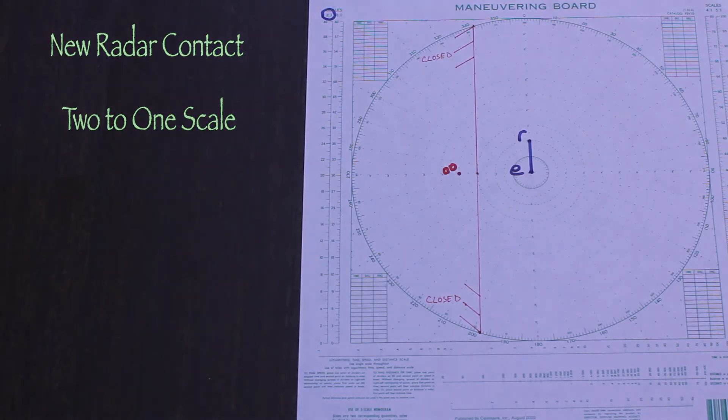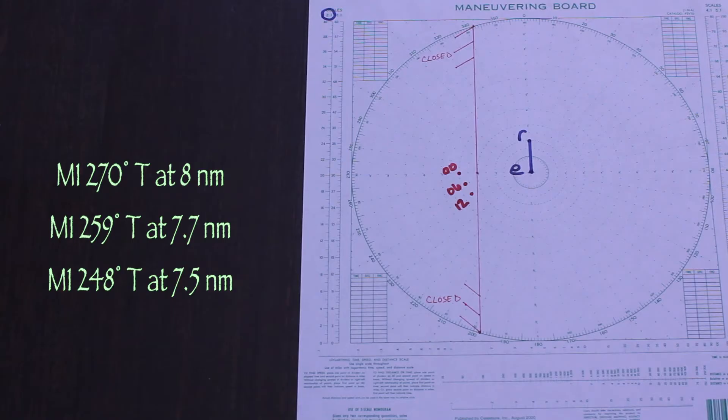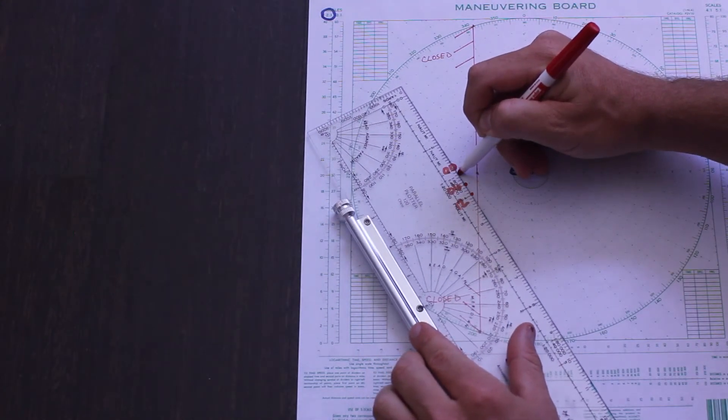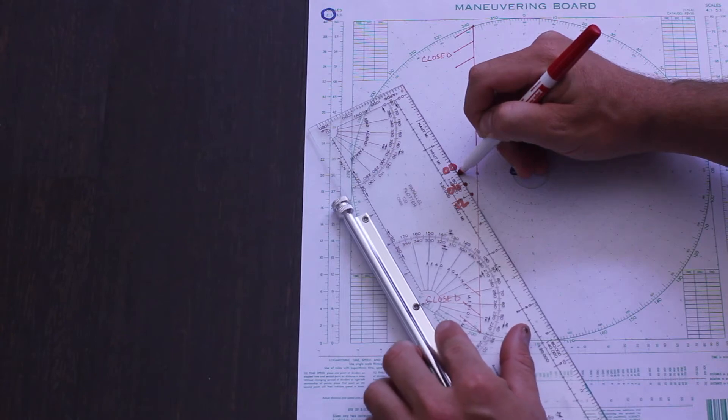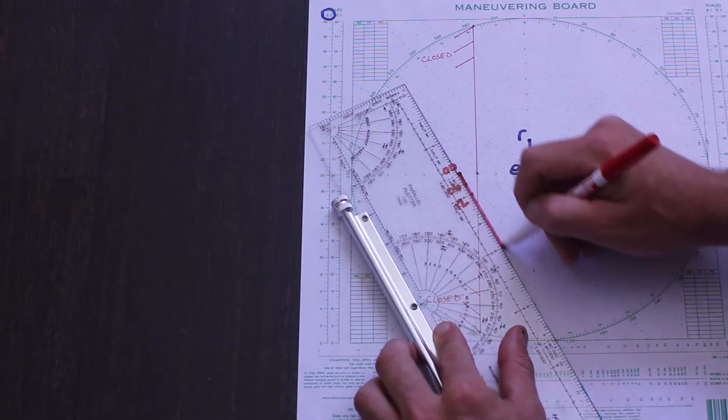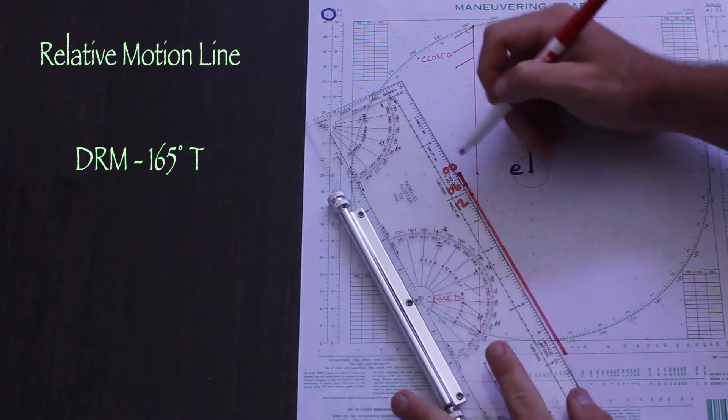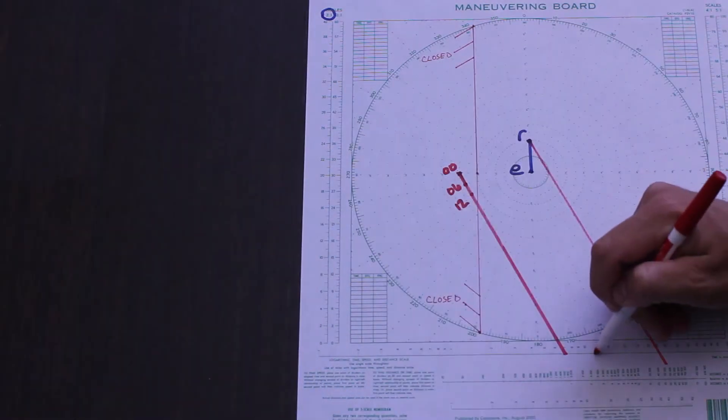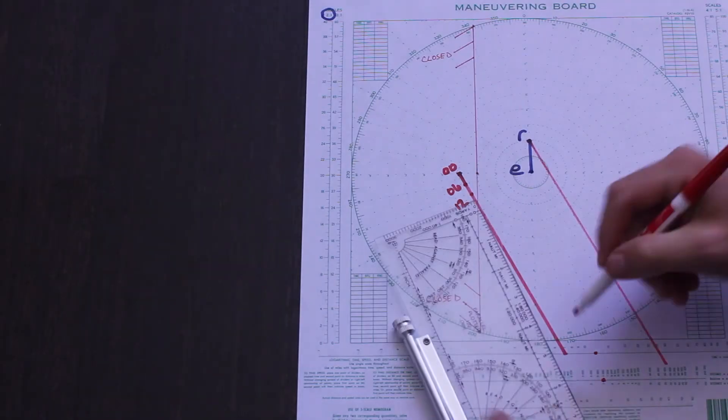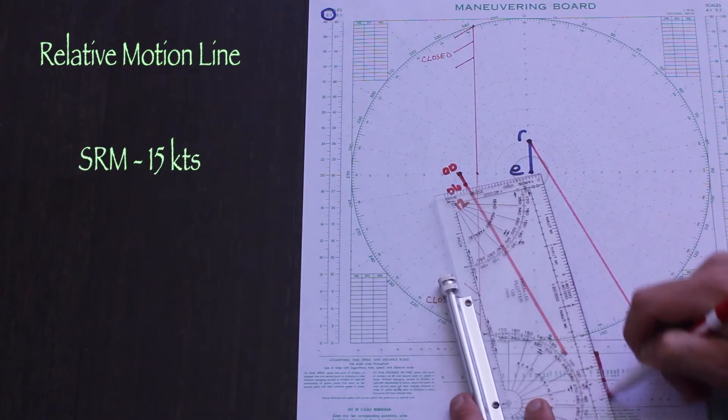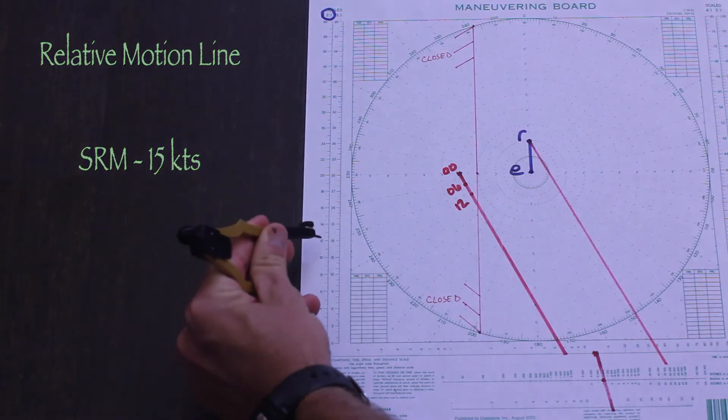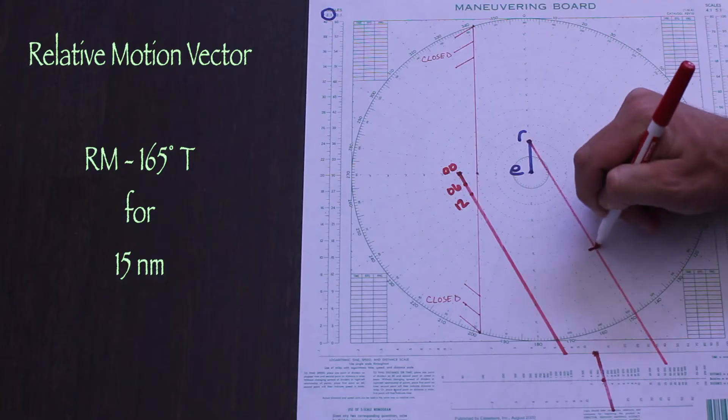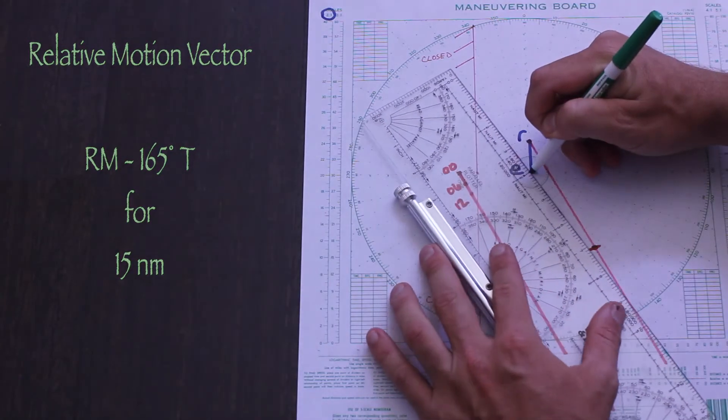So we'll plot the contact as usual and determine its true course and speed. This should be no problem by now. Just remember we're using a 2 to 1 scale.